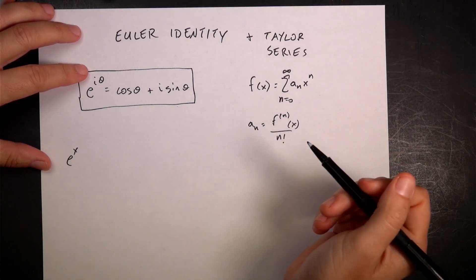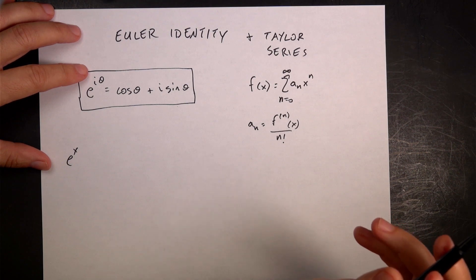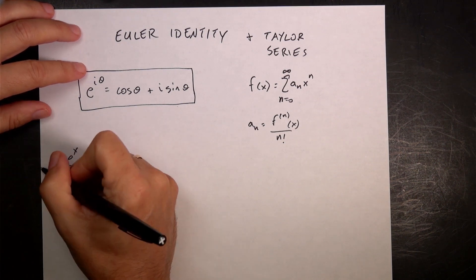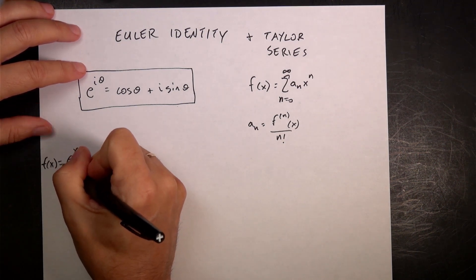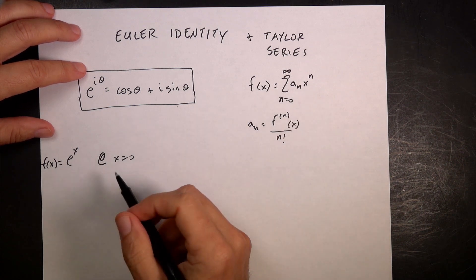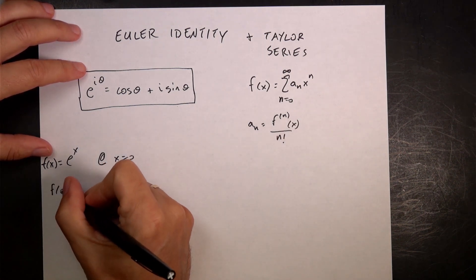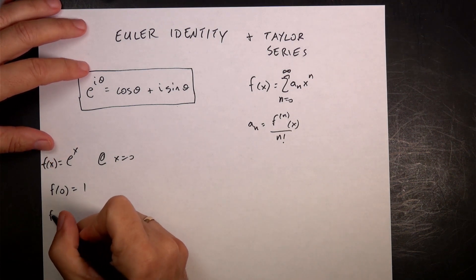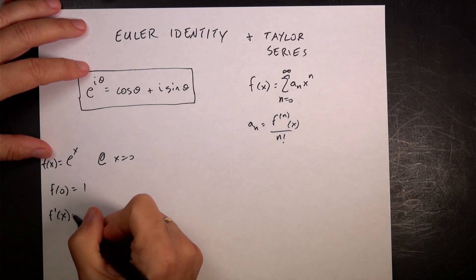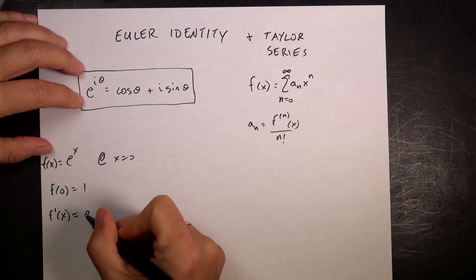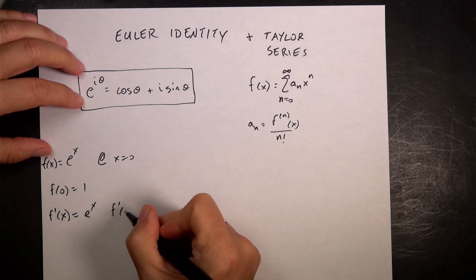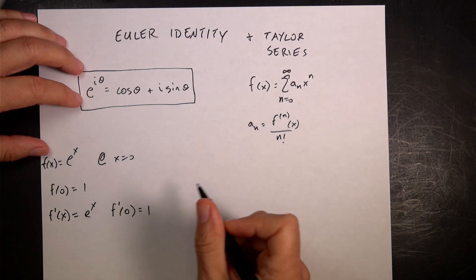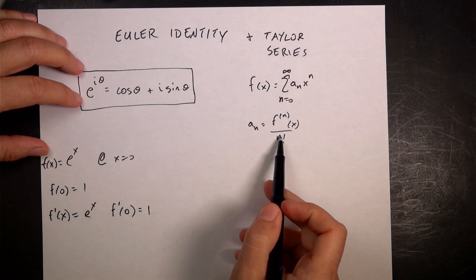I need to find a0, a1, a2 — I'm going to do it about x equals zero. Let's take the derivatives. f of x is e to the x. f of zero equals one. f prime of x is e to the x, so f prime of zero is one. I need to divide by n factorial, so 1 factorial equals one.